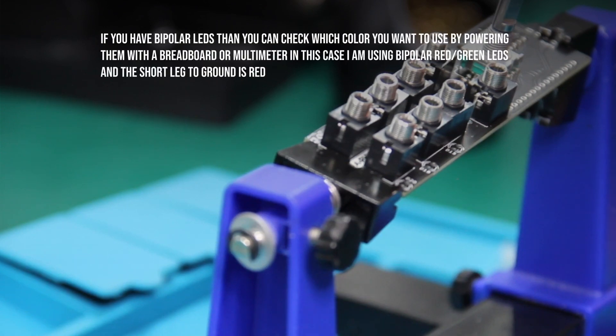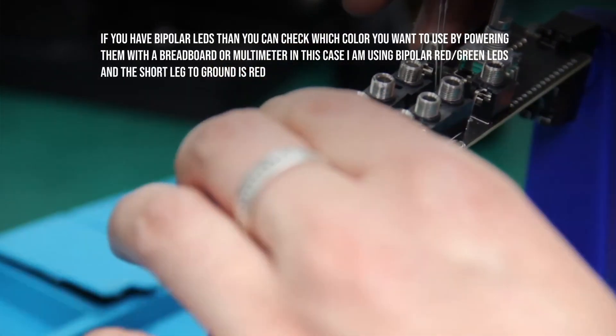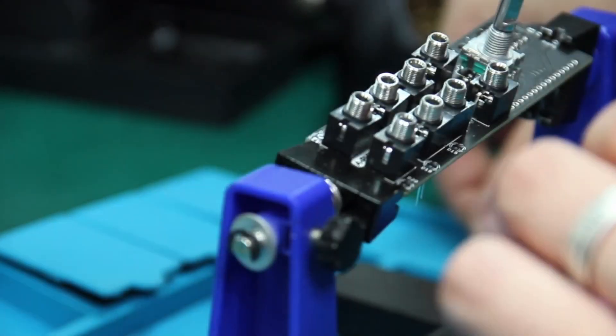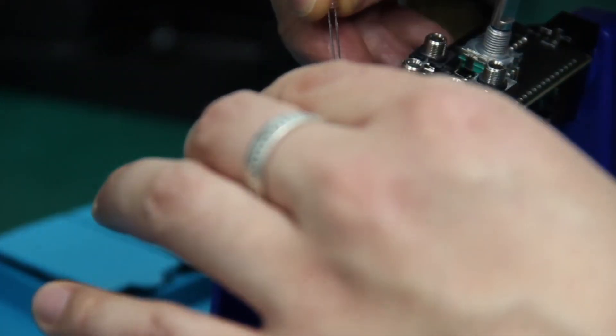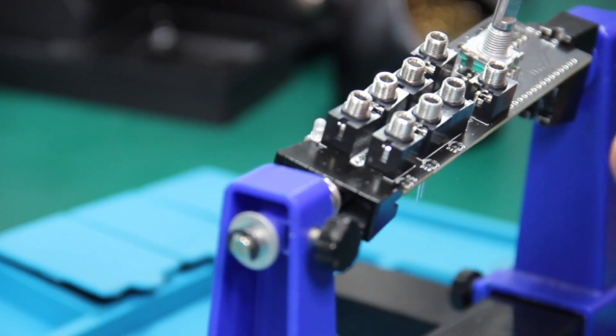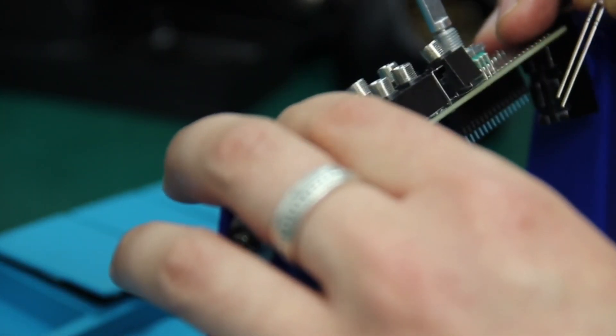If you have bipolar LEDs then you can also check which color you want by powering them from a breadboard power supply. If you have purchased a full DIY kit from us, there will be bipolar LEDs in the kit.